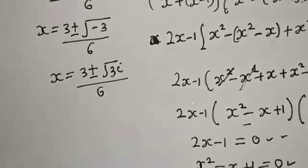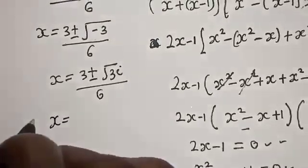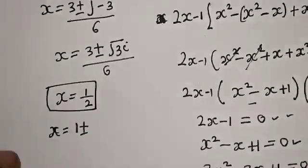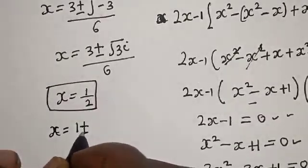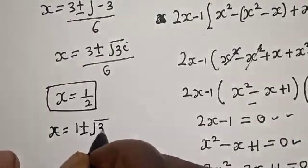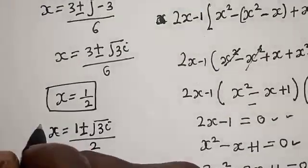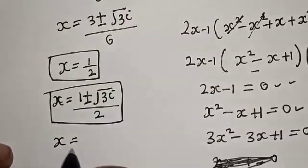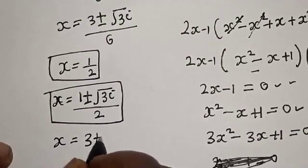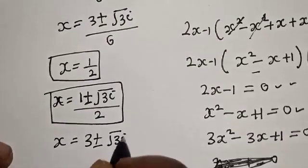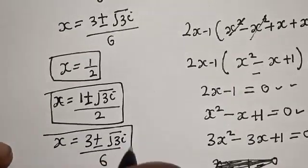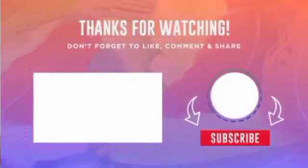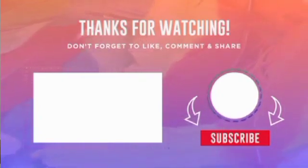Therefore our final answers are: x is equal to 1 over 2, which is the only real solution. Then x is equal to 1 plus or minus square root of 3 times i over 2, and x is equal to 3 plus or minus square root of 3 times i over 6. So these are the values of x — we have 1 real solution and 4 imaginary solutions. If you enjoyed the class, please don't forget to like, share, comment and subscribe. Thank you.